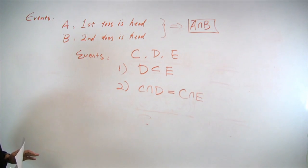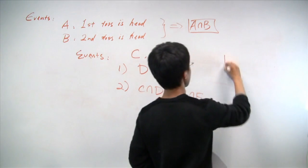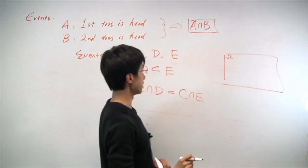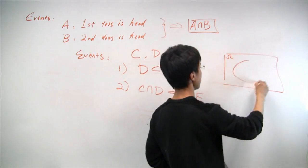So this will be our choice events, and let's see a particular example. Let's say you have a sample space here, and some event E.